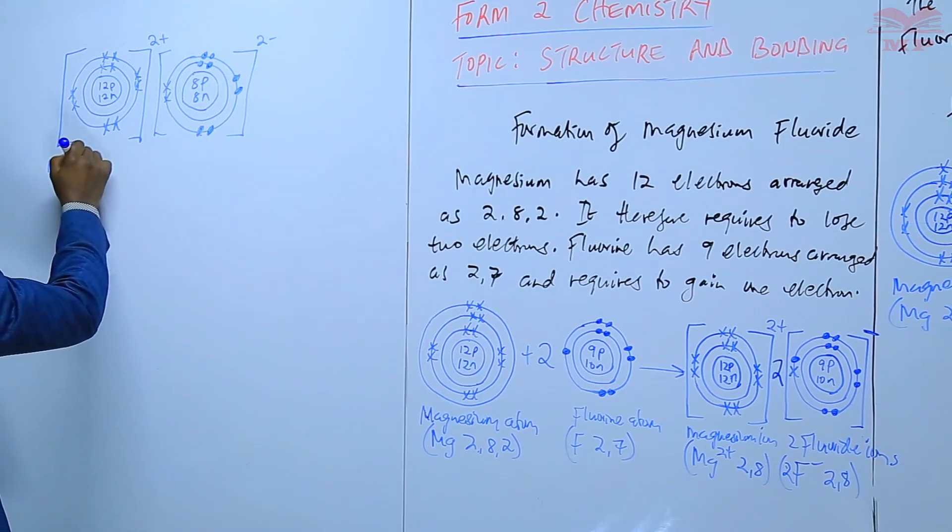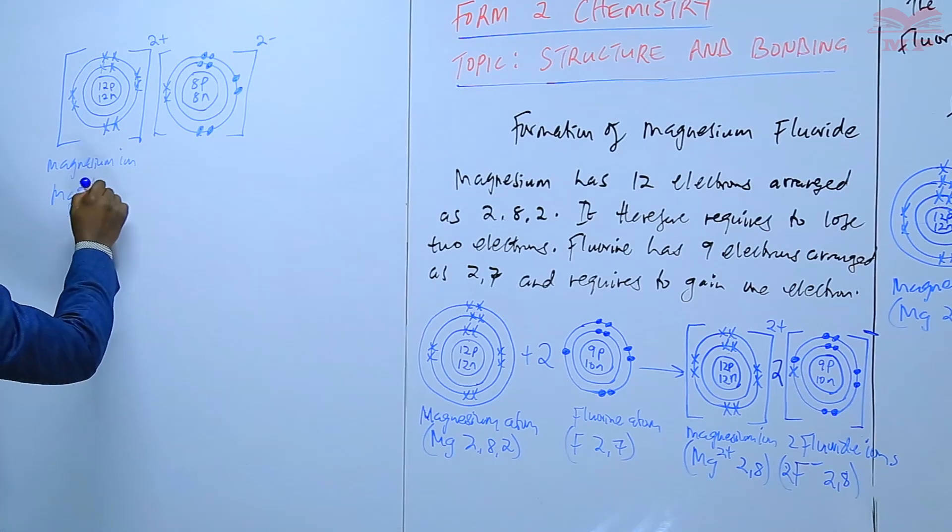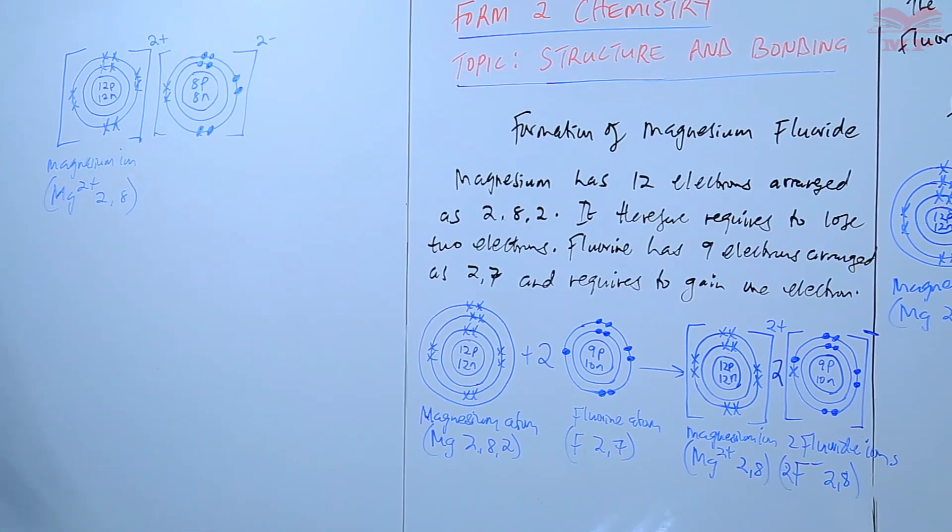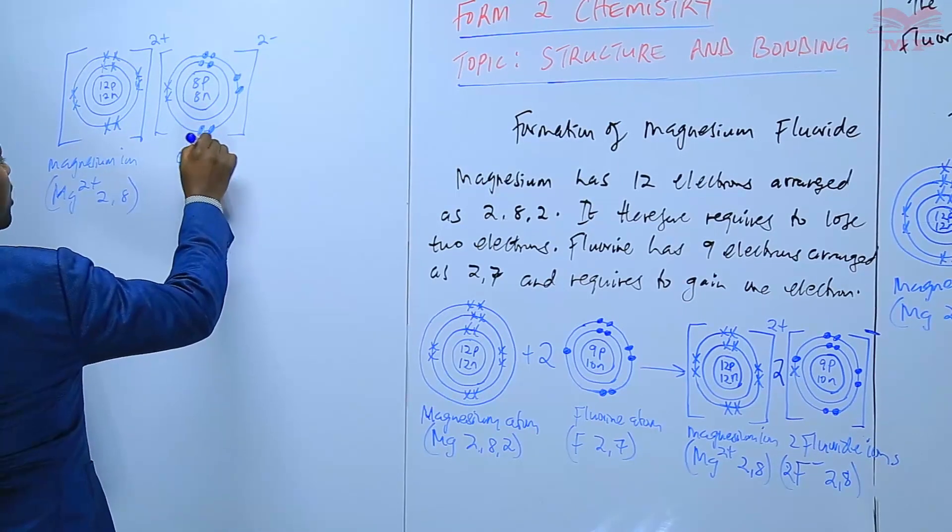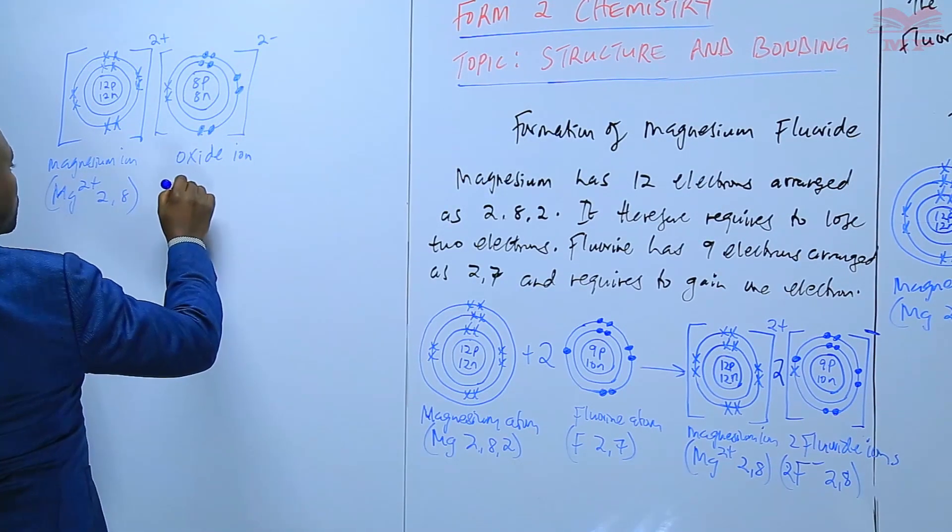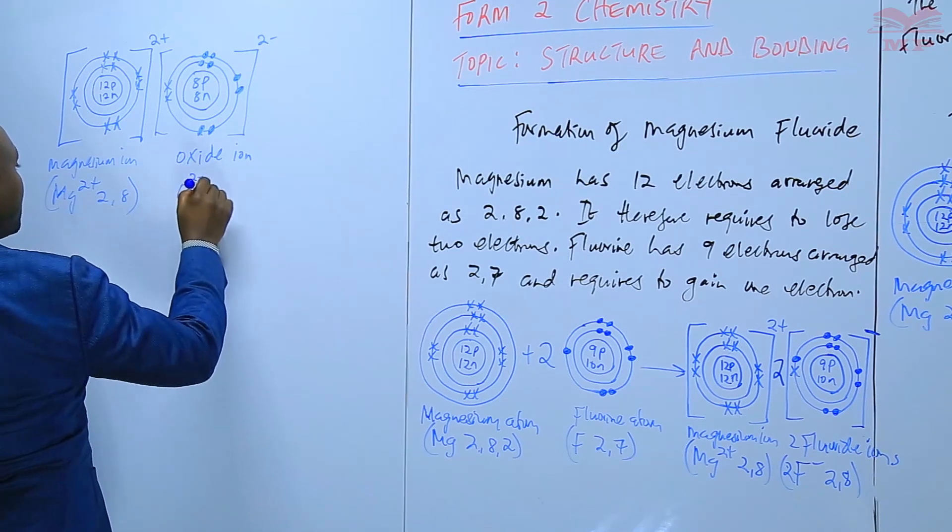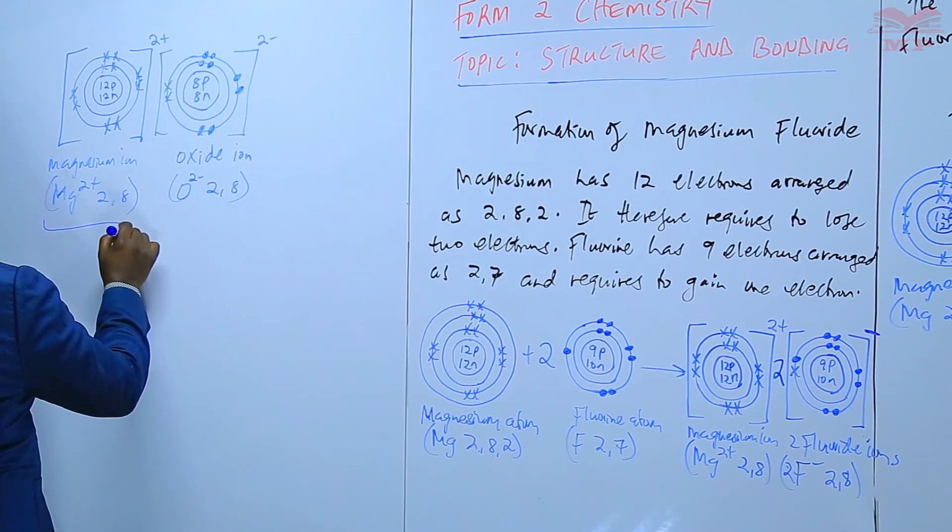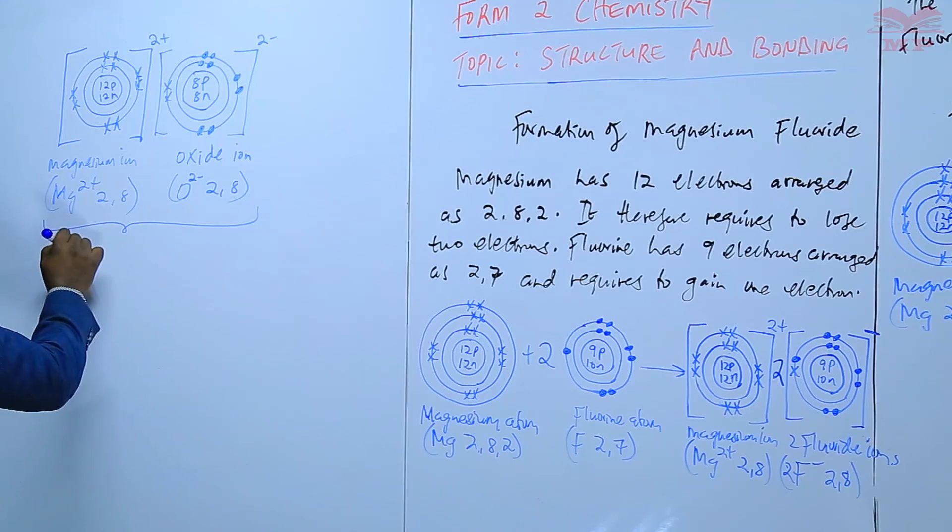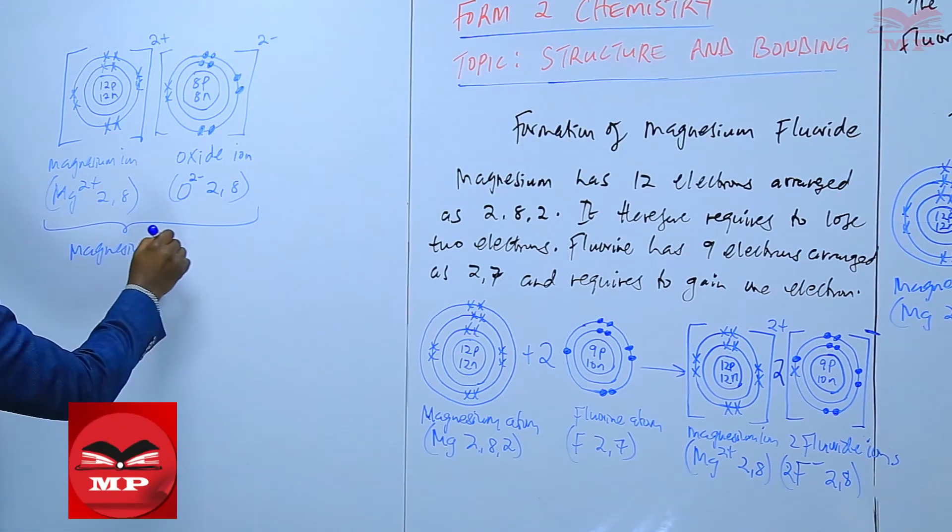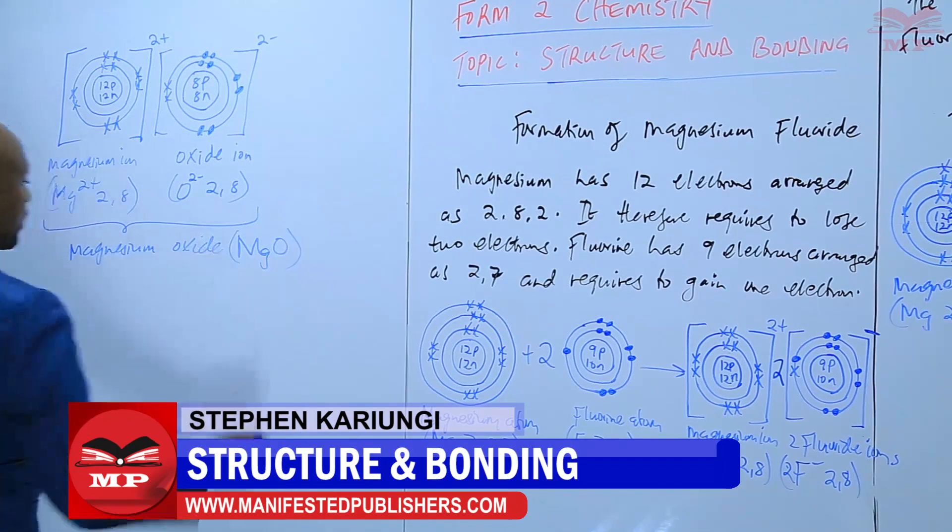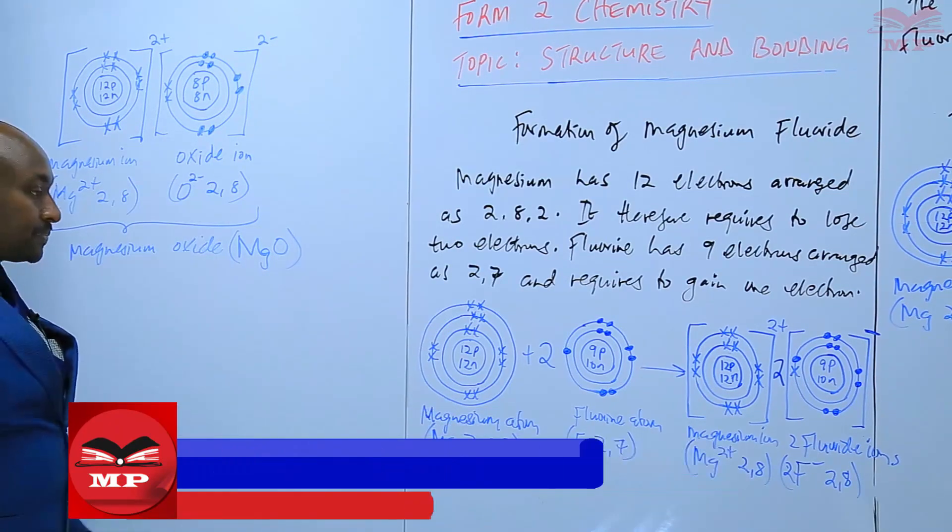This is a magnesium ion Mg 2+, the arrangement is 2,8. Oxygen forms an oxide ion O2-. The whole of this compound is what now we are referring to as magnesium oxide, because it has a magnesium ion and an oxide ion.